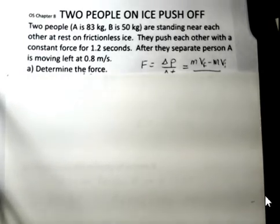They're going to reach out their arms and push against each other with a constant force and they maintain that force on each other for 1.2 seconds. After they separate, we are given that person A is moving to the left at 0.8 meters per second and we want to know the value of the force.